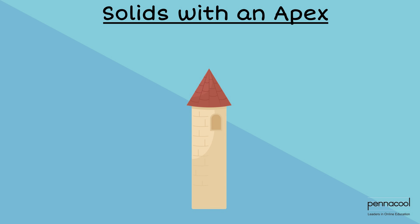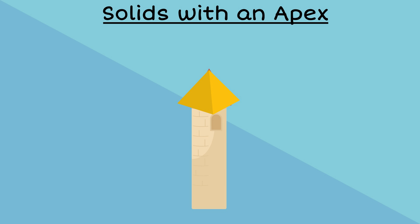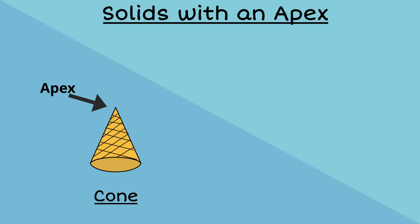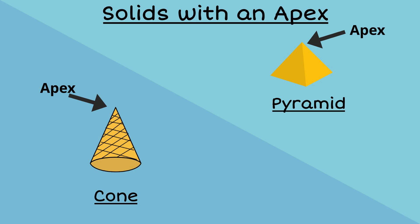Solids with an apex — also called a vertex at the top of the solid — are usually placed at the top of structures. These solids include cones and pyramids. They can be placed to stand on their flat base, as they would be unstable if placed to stand on the apex.